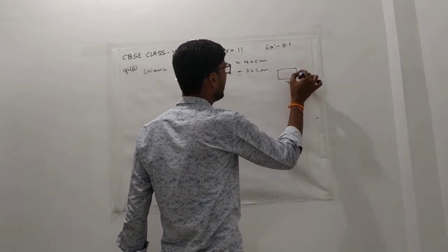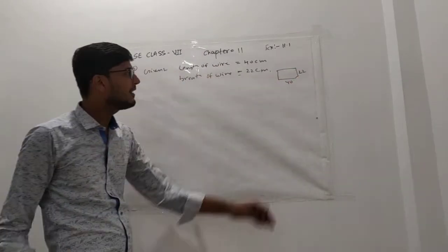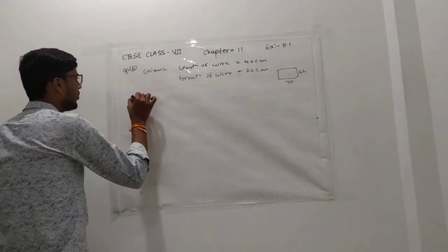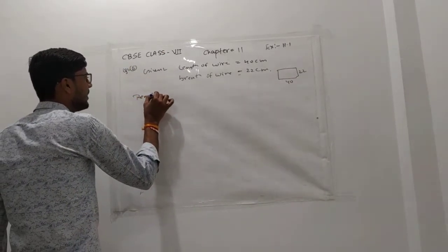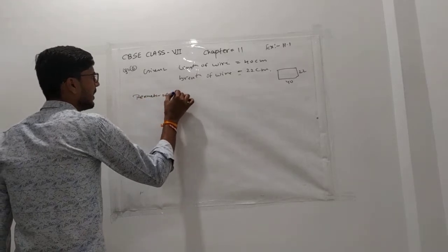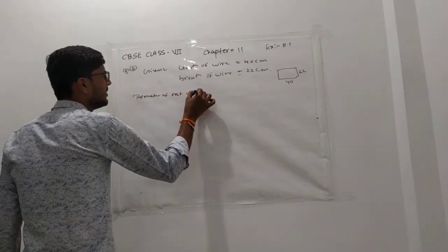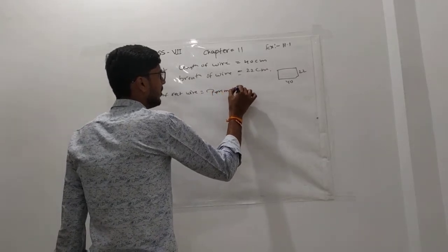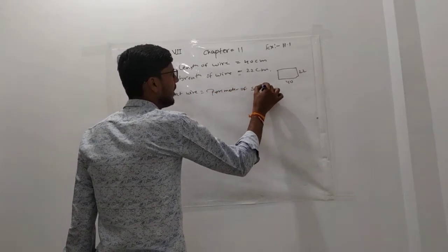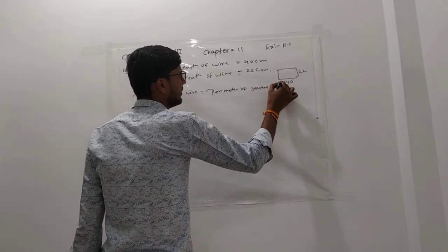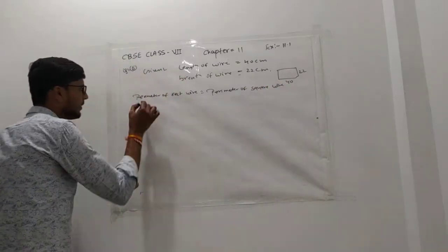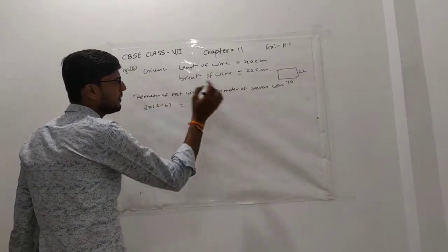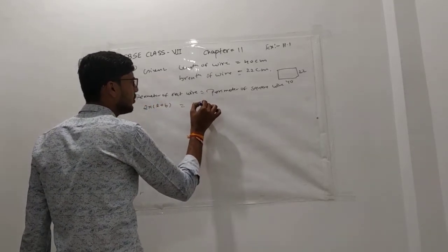In rectangle form it is 40 and 22 cm, so that is the perimeter of the rectangle. According to the question, the perimeter of the rectangular shape wire is equal to the perimeter of the square shape wire. Perimeter of rectangle is 2 × (length + width), and perimeter of square is 4 × side.